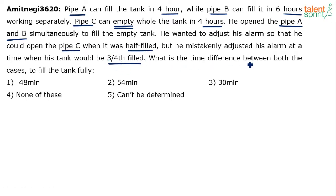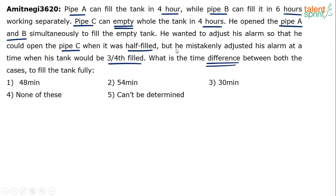What is the time difference between both the cases to fill the tank fully? There are three pipes A, B, and C with times 4 hours, 6 hours, and 4 hours respectively. A and B are required to fill the tank; C can empty the tank. Pipe A and B have been initially opened to fill the empty tank. After half of the tank is filled, pipe C is opened in one case; after three-fourths is filled, pipe C is opened in the other case. We have to find the difference between the two cases.